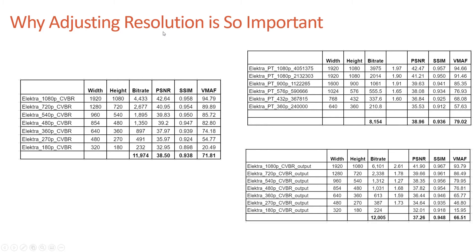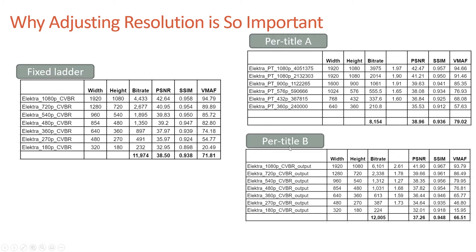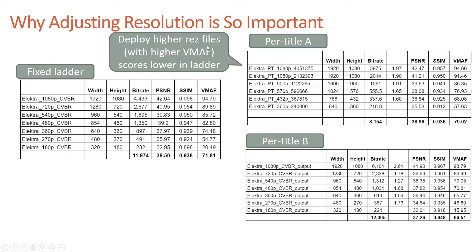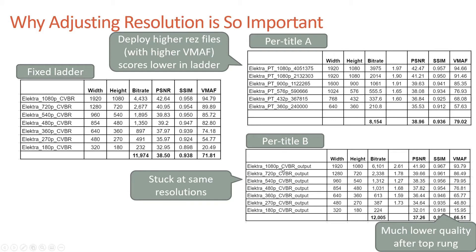Adjusting resolution is a different take on the same theme. Per-title A deployed higher resolution files up in the encoding ladder — 1080p, 1080p, 900p, 576p — improving VMAF scores compared to per-title B, which uses the same resolutions as the fixed ladder. Per-title B suffers comparatively at nearly every rung, particularly lower rungs, because higher resolutions typically yield better quality.